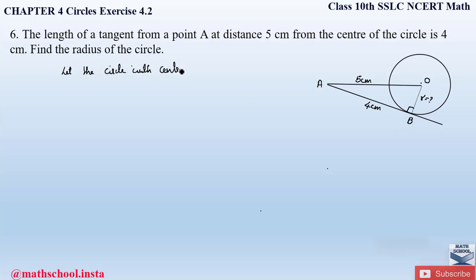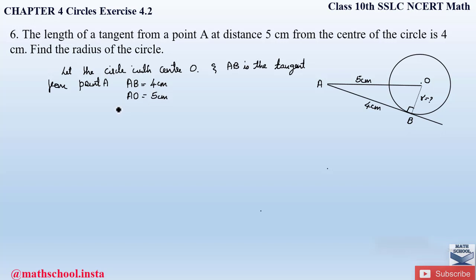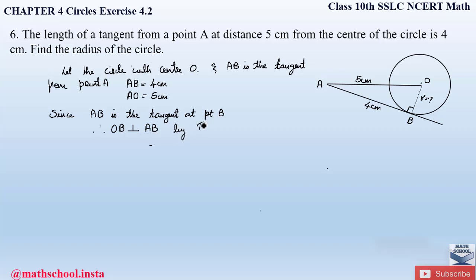Let us write down the solution. Let the circle have center O, and AB is a tangent from point A. Therefore AB = 4 centimeters, and AO = 5 centimeters. We need to find the radius OB. Applying Theorem 4.1: since AB is a tangent at point B, OB is perpendicular to AB. The full statement of the theorem is: the tangent at any point of a circle is perpendicular to the radius through the point of contact. Please write down this theorem statement to obtain full marks.